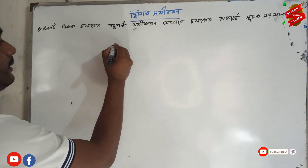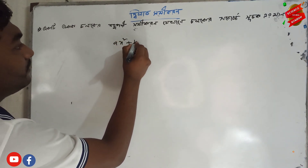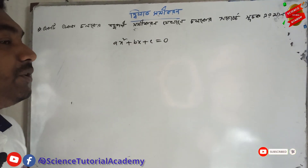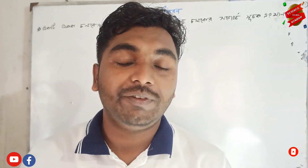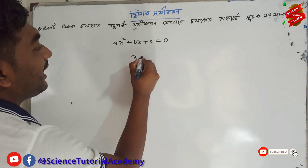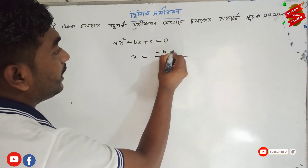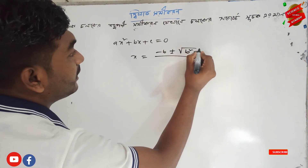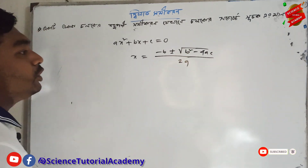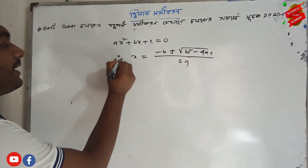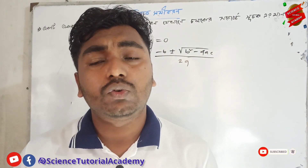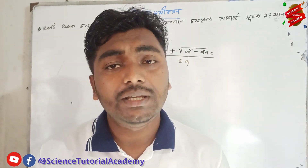c is equal to 0. So let's spell it. As I said, x equals minus b plus or minus root over b squared minus 4ac, by 2a. We know that x is equal to minus b plus or minus root over b squared minus 4ac by 2a.